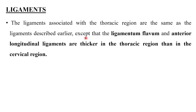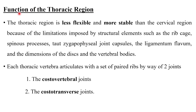Coming to the function of the thoracic region, the thoracic region is less flexible and more stable than the cervical region because of the limitations imposed by structural elements such as the rib cage, spinous processes, taut zygapophysial joint capsules, the ligamentum flavum, and the dimensions of the disc and vertebral bodies.